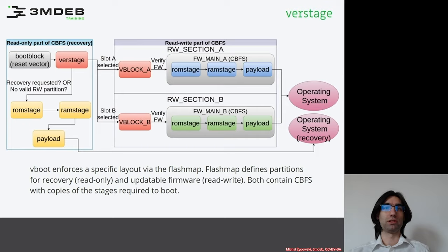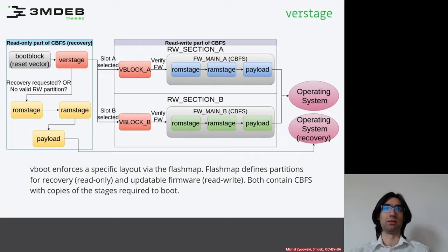VBoot enforces this specific layout via the FlashMap. The read-only part is typically called recovery, and the read-write parts are updatable firmware. Each of these partitions contains copies of the executable stages that are necessary to proceed from the boot block and first stage.